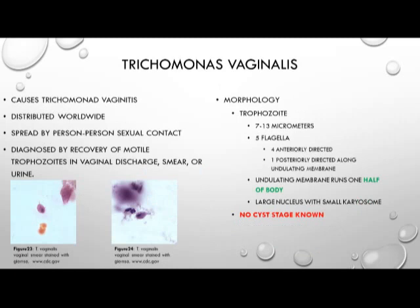Trichomonas vaginalis causes trichomonas vaginitis. It is distributed worldwide and spread person-to-person through sexual contact — it is an STI. It is diagnosed by recovery of the motile trophozoite in vaginal discharge, smear, or in urine. The trophozoite measures 7 to 13 micrometers with five flagella — four anteriorly directed and one posteriorly directed along the undulating membrane. Unlike Trichomonas hominis, this undulating membrane only runs half the length of the body. It has a large nucleus with a small karyosome, and no cyst stage is known.